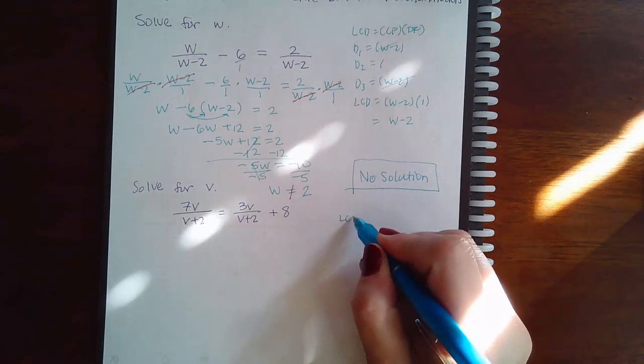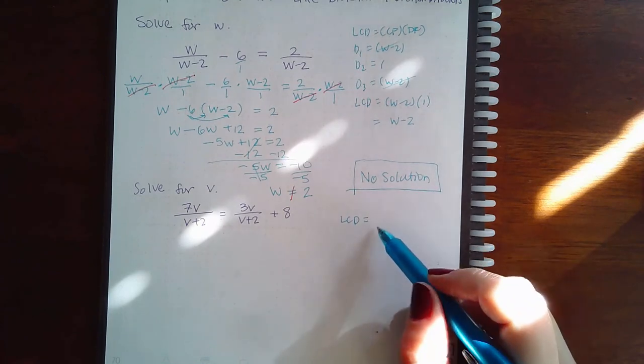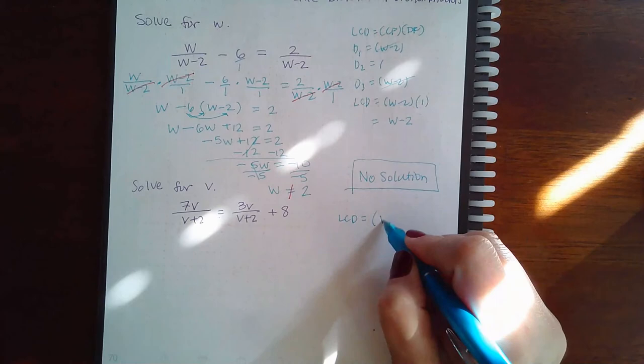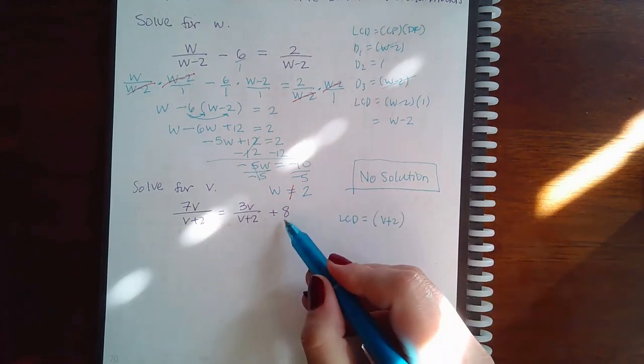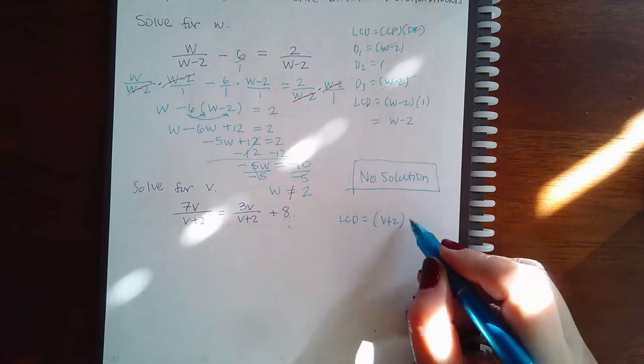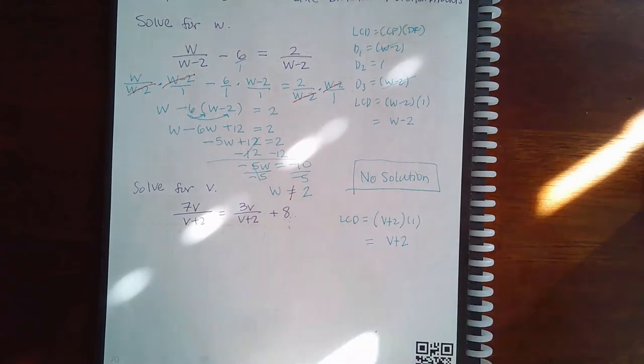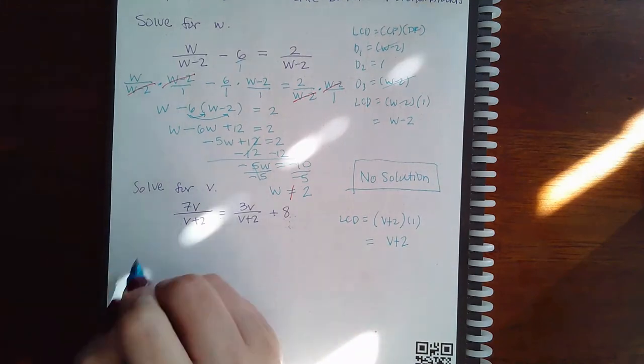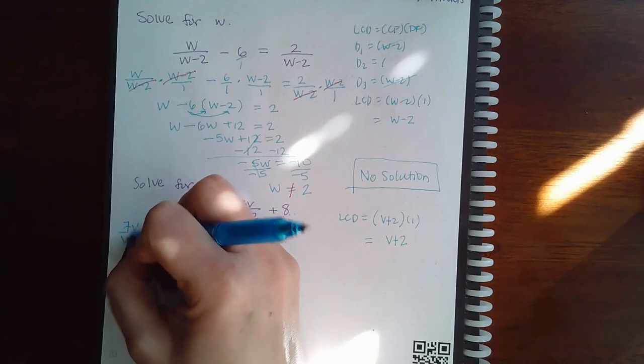Let's try another one. So again, the LCD is going to be the factors they have in common and the factors that they have different. So I see the factors they have in common are v plus 2, and there's really nothing different. This one doesn't have a denominator. If you think of it as a 1, it doesn't matter. The LCD will still be v plus 2. So we're going to take each fraction and multiply it by v plus 2 over 1.